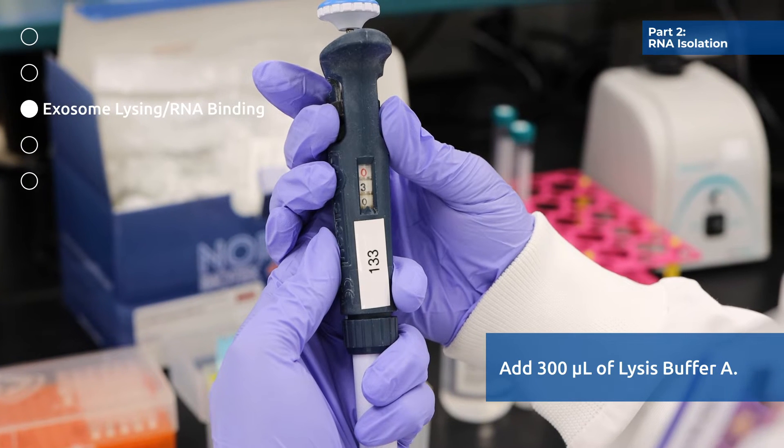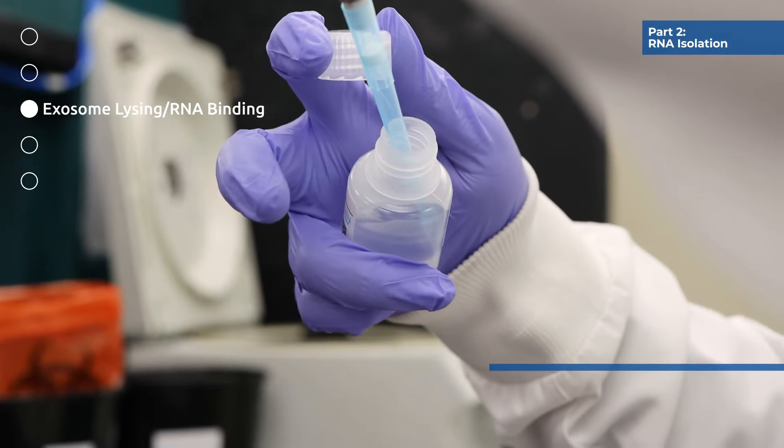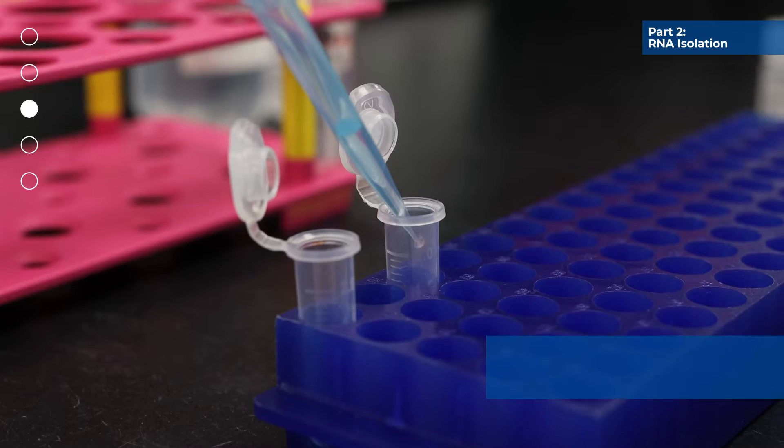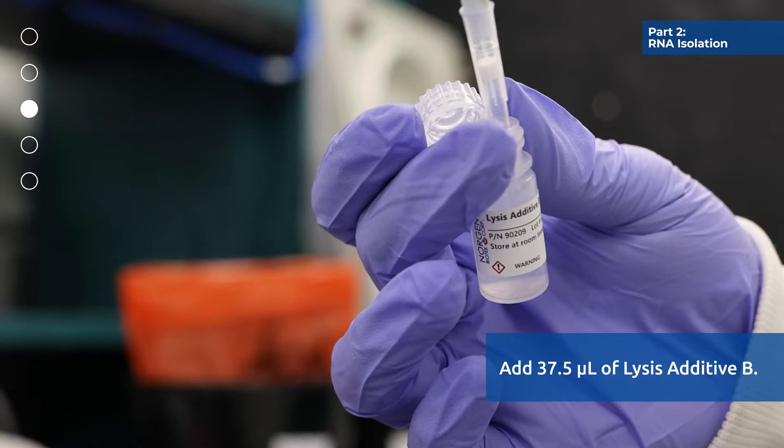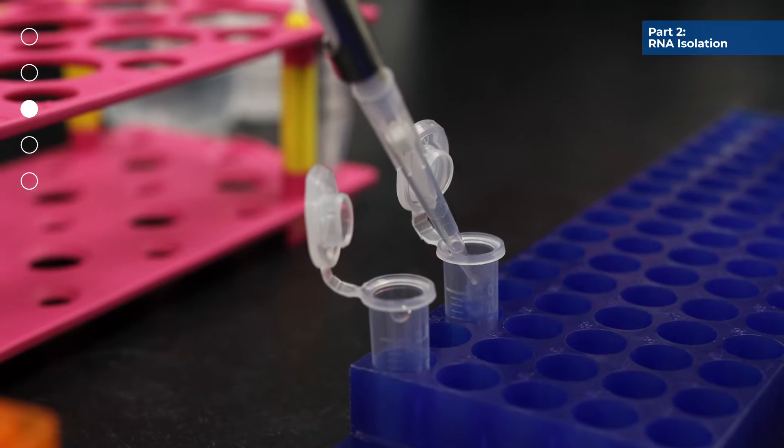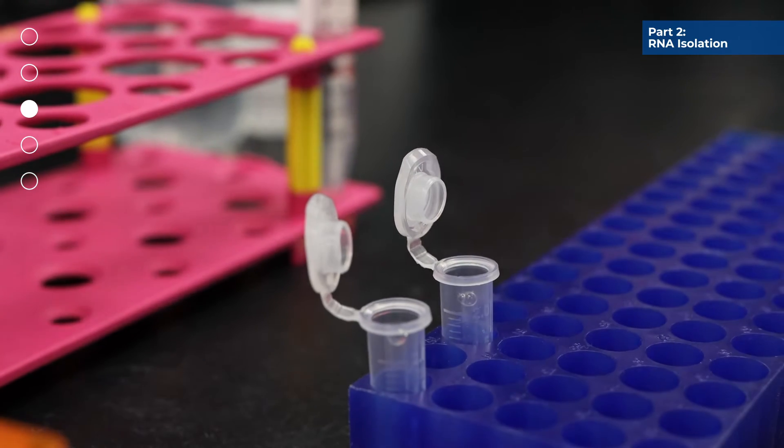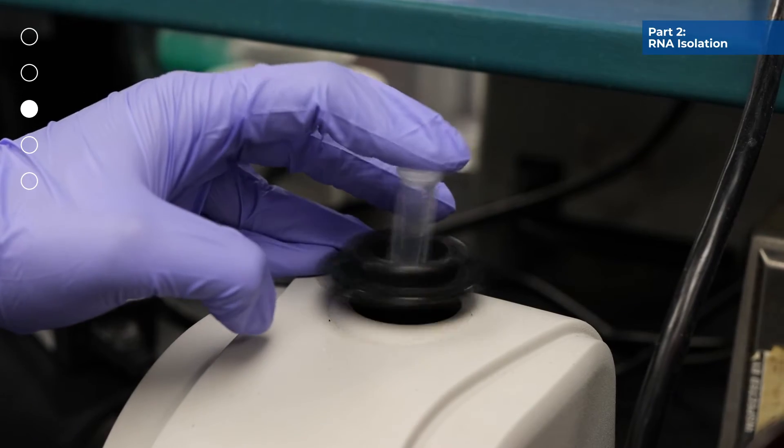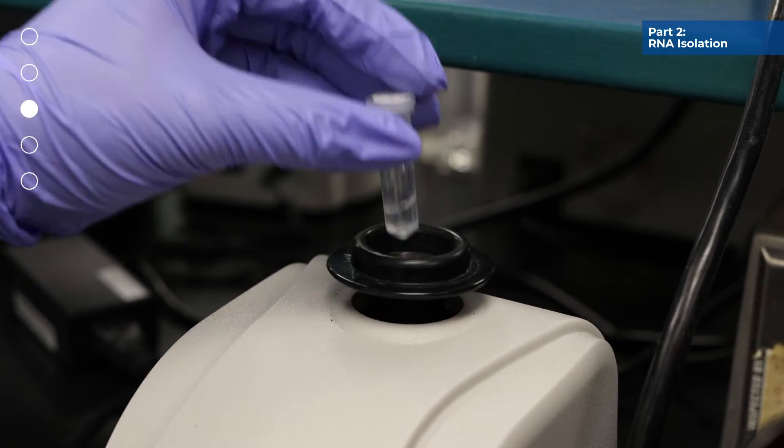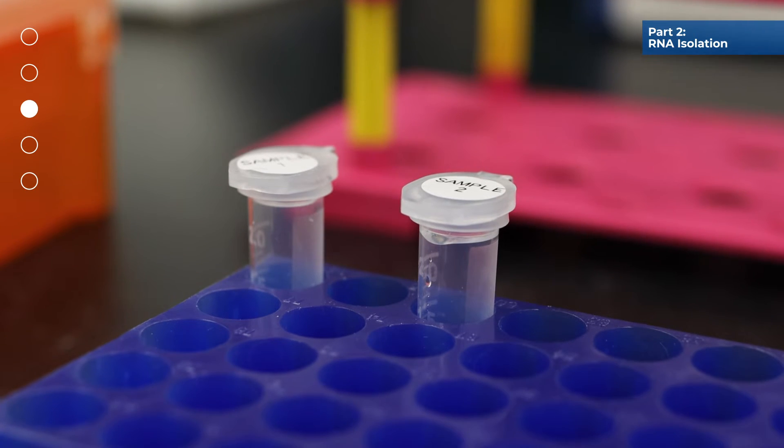Add 300 microliters of lysis buffer A and 37.5 microliters of lysis additive B to the 200 microliter exo R buffer containing the purified exosomes. Mix well by vortexing for 10 seconds. Then incubate at room temperature for 10 minutes.